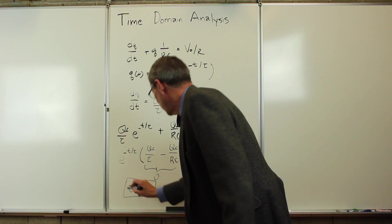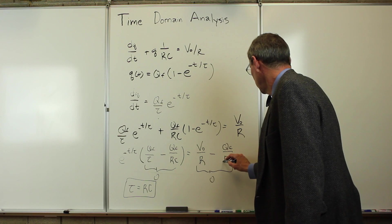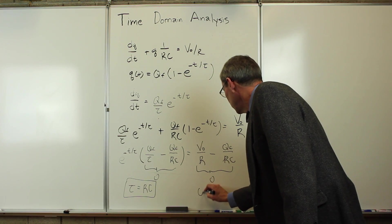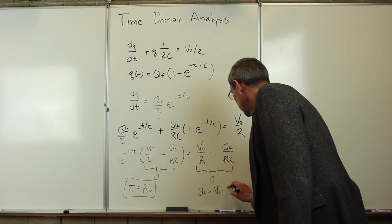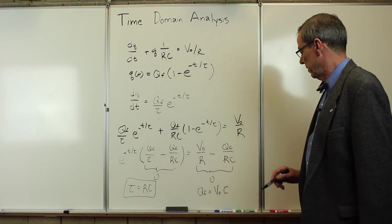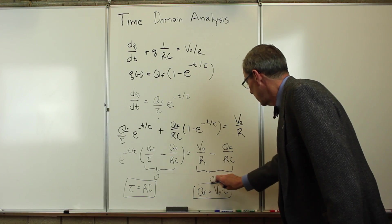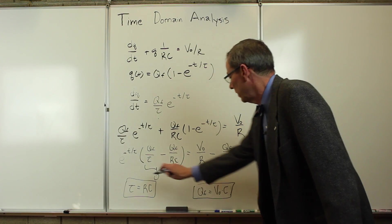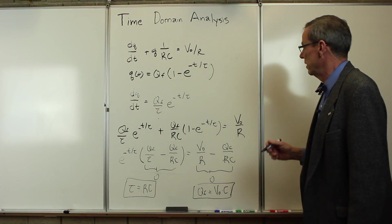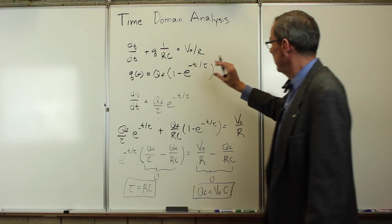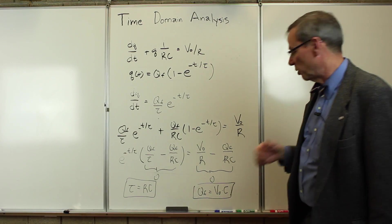So that, this one tells us that characteristic time has to be R times C. If you work that out, it's got units of time. And here, the R's are going to cancel, Q_final has to be V0 times C. So if those two constants, Q_final and tau, are chosen like this, in this expression here, then this will be a solution of that expression. So let's go ahead and examine that a little more carefully here.